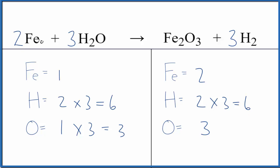And then a two is our coefficient in front of the iron, one times two, that'll give us two. We're done. This equation is balanced.